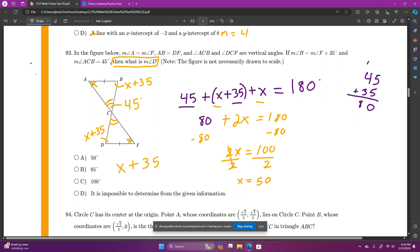And our answer is not 50 though, right? The question was, what's the measure of angle D? Angle D is X plus 35. So we know X is 50. So I can wipe out the X and plug in the 50. And our answer is 50 plus 35, which is going to be answer choice B, 85 degrees. And that's it for number 93.